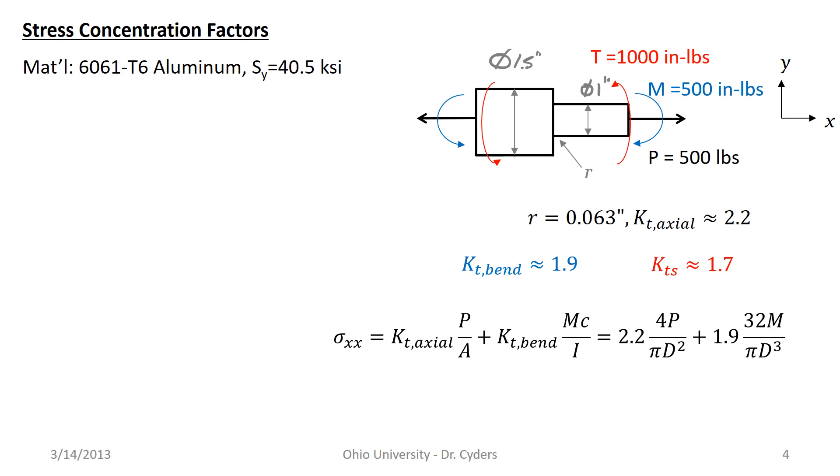The way that we would normally approach this is to say sigma x-axis, assuming x is our longitudinal axis of our part here, is going to be combined, the bending stress and the axial stress. It's going to be up here and down here at the top and bottom where we experience both of our maximum bending stresses and our axial stress, which is present throughout the cross-section. So sigma x-axis is going to be KT axial times P over A, our nominal stress there, plus KT bending times MC over I. Each part of that stress equation is increased by its respective KT value. We have 2.2 times 4P over pi D squared, plus 1.9 times 32M over pi D cubed. Similarly, our shear stress is increased by our KTS value. We have TC over J times our 1.7 here.